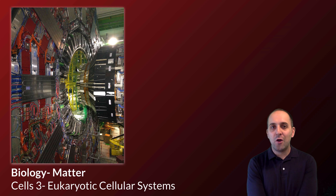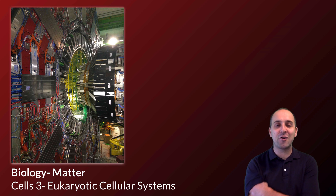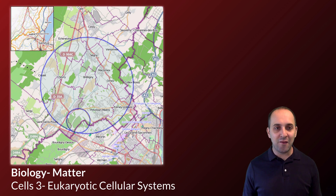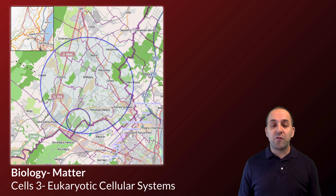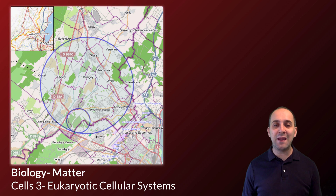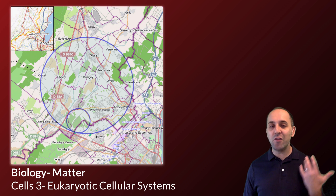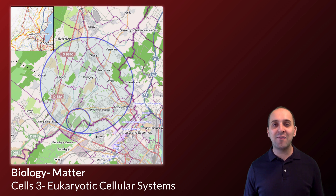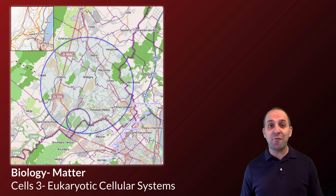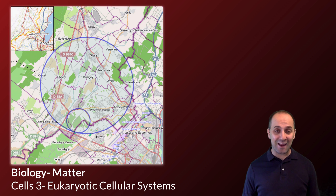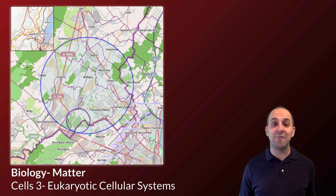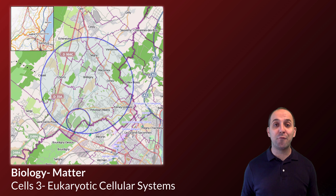This is not a picture of a eukaryotic cell. This is a picture of a detector in the Large Hadron Collider, which is the largest particle accelerator on the planet, located in Europe spanning the border between Switzerland and France. I'm putting it up here as an example of one of the most complex machines we have ever made, just to make the point that even though this has millions of different components all functioning together, it has nothing on a cell. Cells are much more complex, containing billions, if not tens of billions, of individual components all functioning together in ways that we certainly do not fully understand.